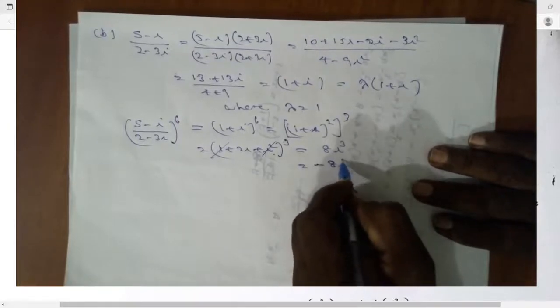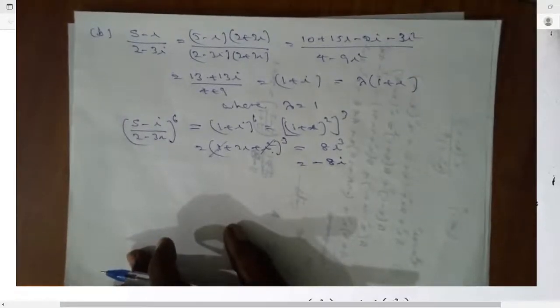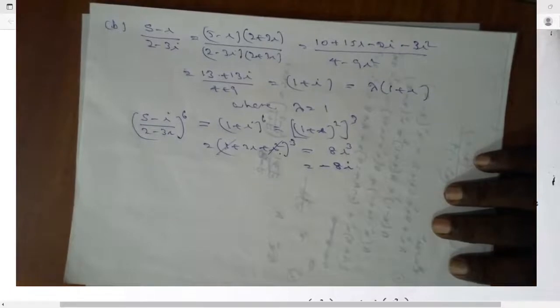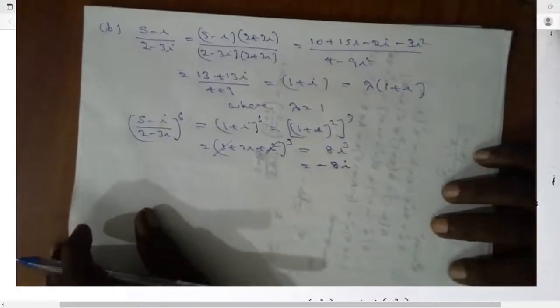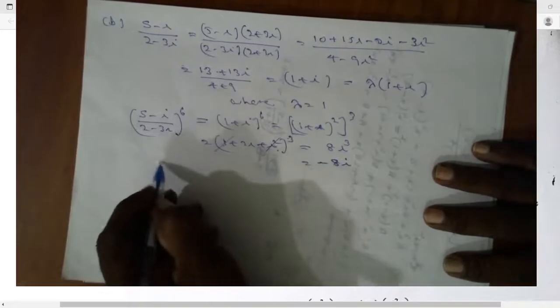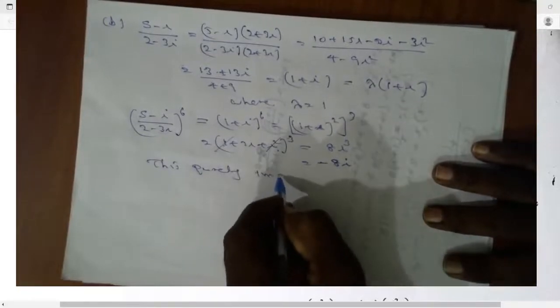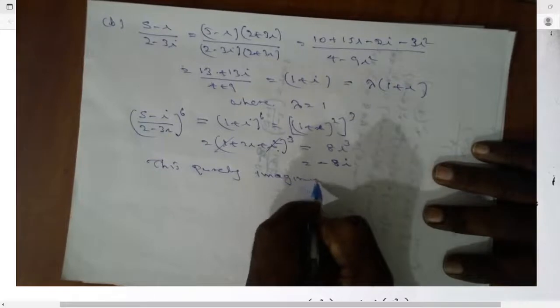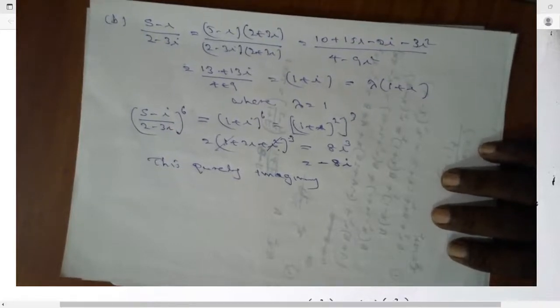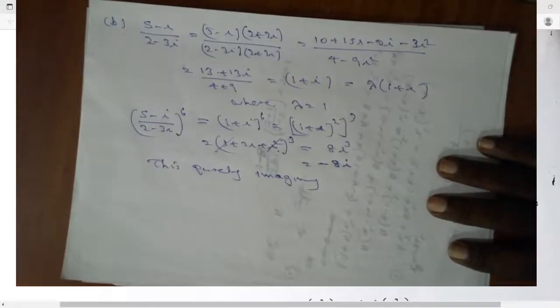Complex numbers are generally imaginary. But this complex number is pure imaginary. Purely imaginary. That's right. Purely imaginary. Now if you take this purely imaginary, purely imaginary means the real part is zero. If the real part is zero, we say purely imaginary.